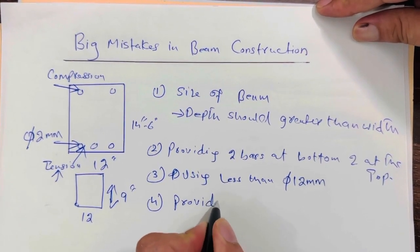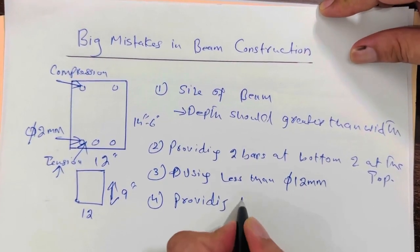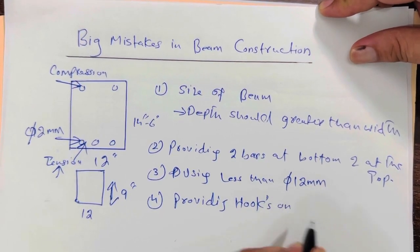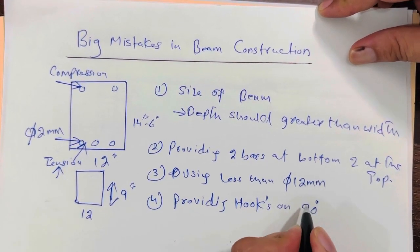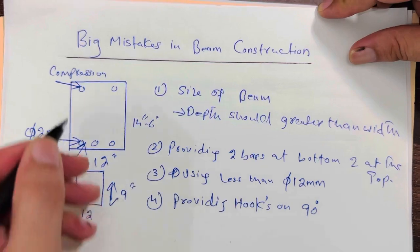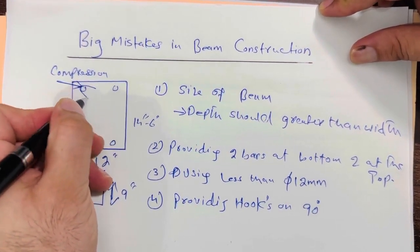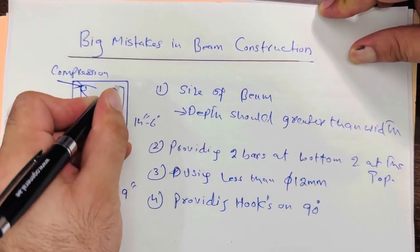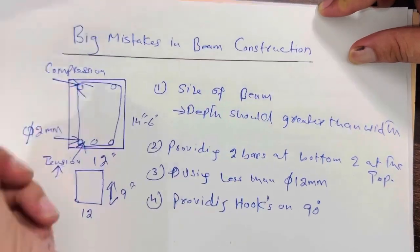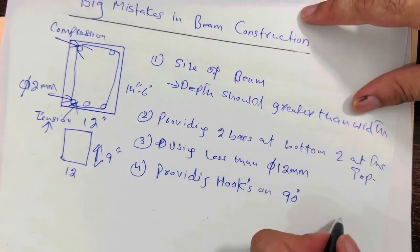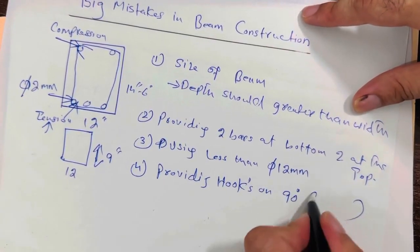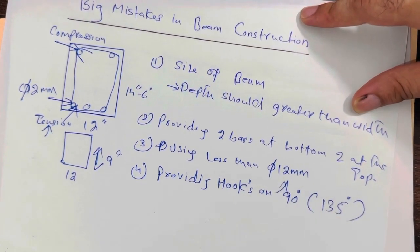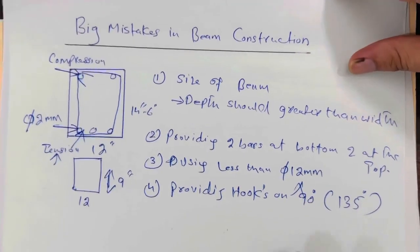Another big mistake is providing hooks at 90 degrees. Hooks should be provided at 135 degrees, not at 90 degrees.